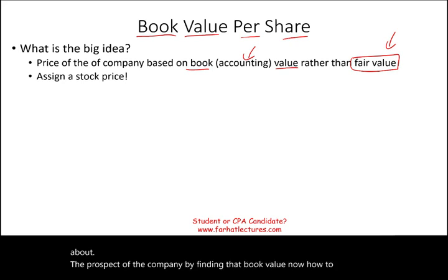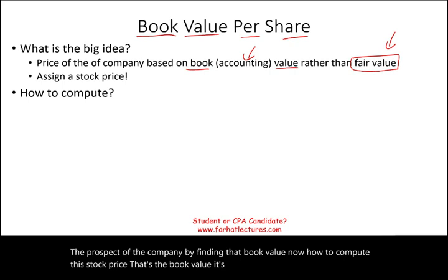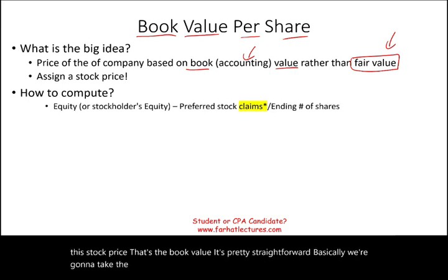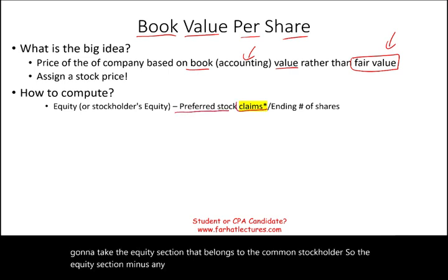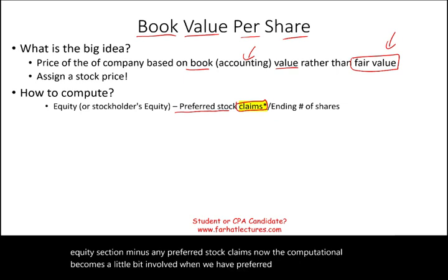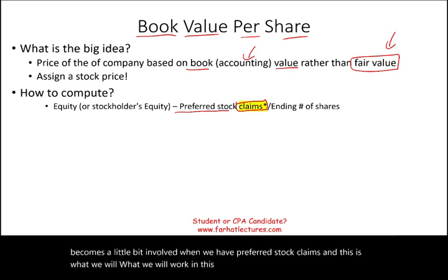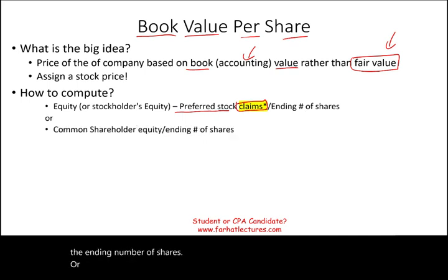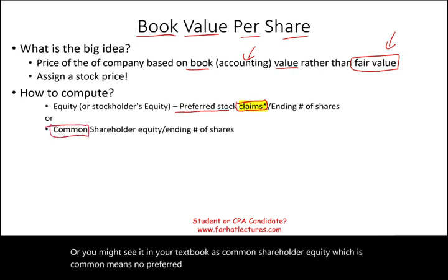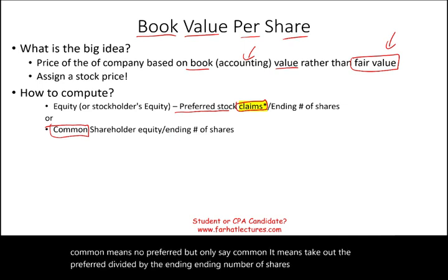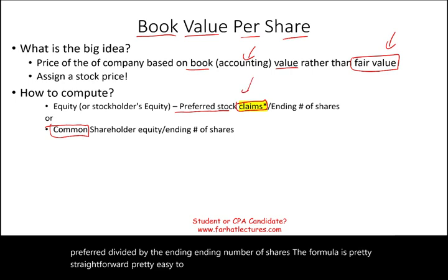To compute this stock price — the book value — it's pretty straightforward. We take the equity section that belongs to the common stockholder, so the total equity minus any preferred stock claims, divided by the ending number of shares outstanding. You might see it in your textbook as common shareholder equity divided by the ending number of shares. The formula is easy to compute unless you have preferred stock claims.